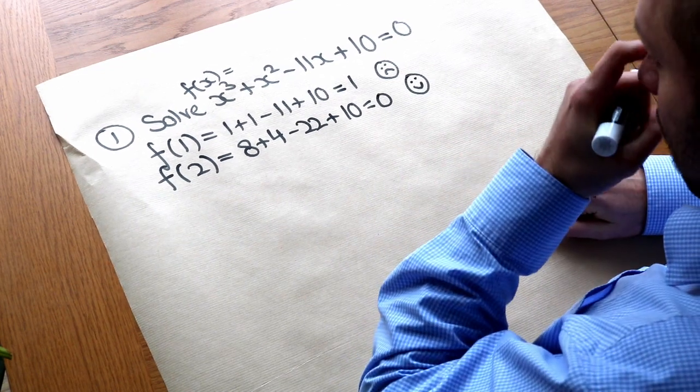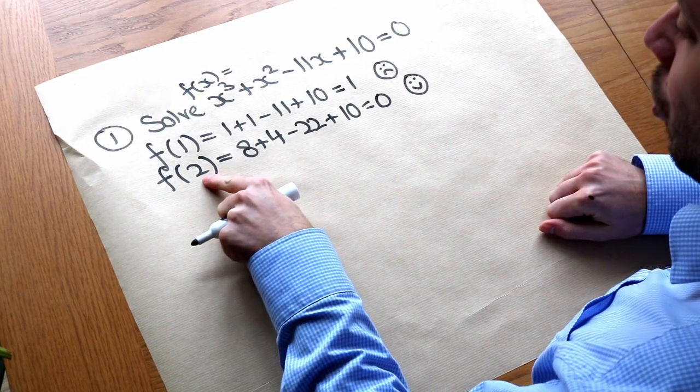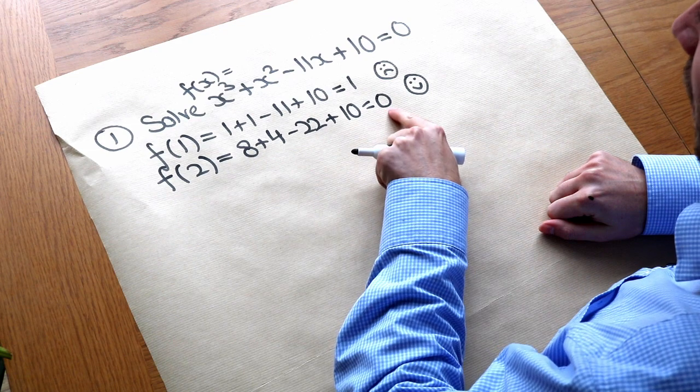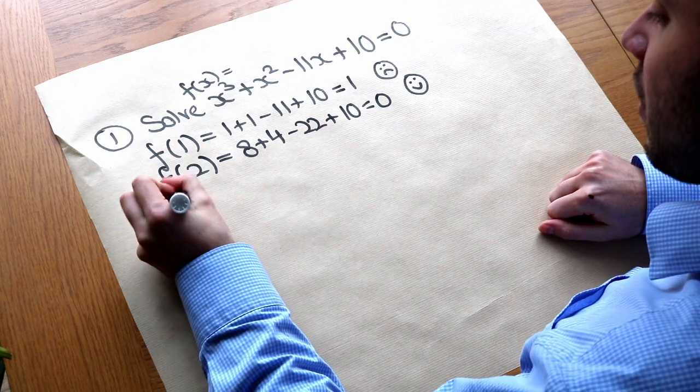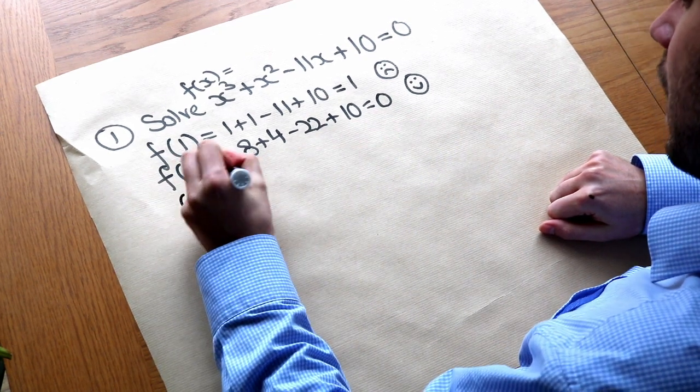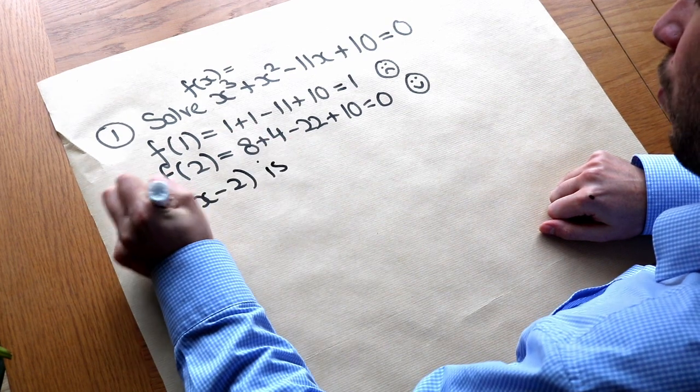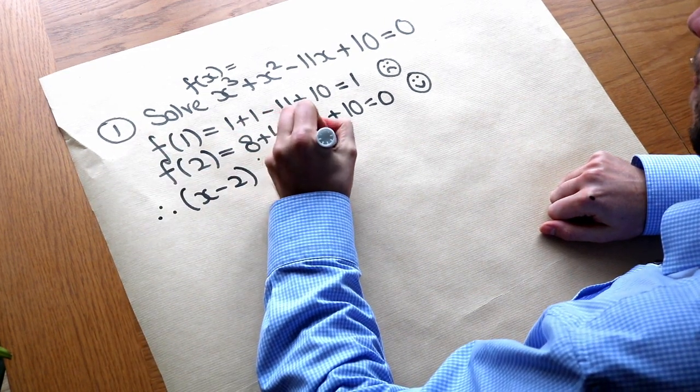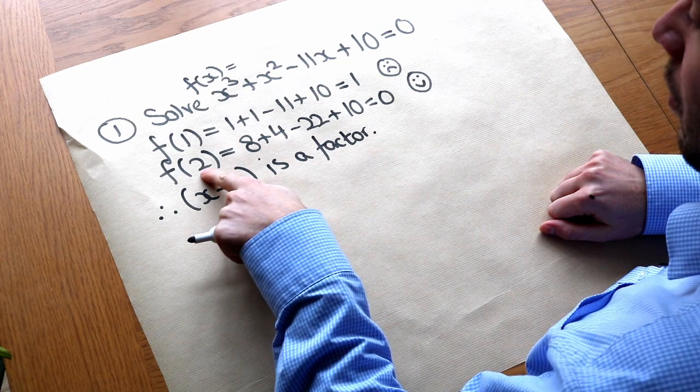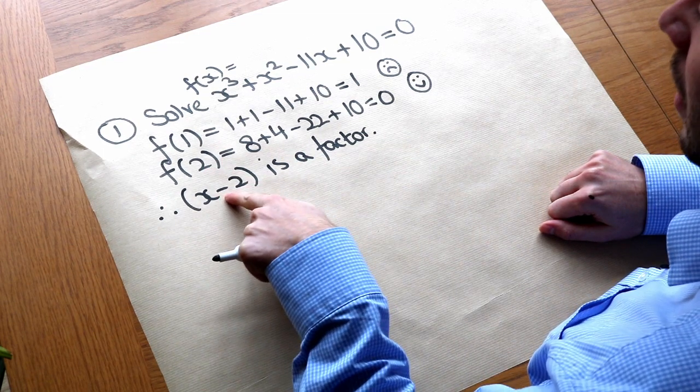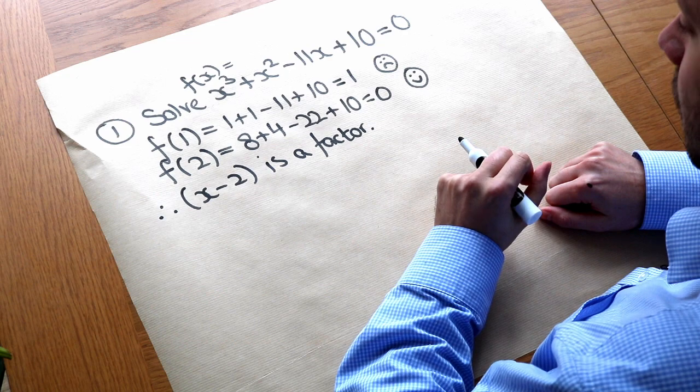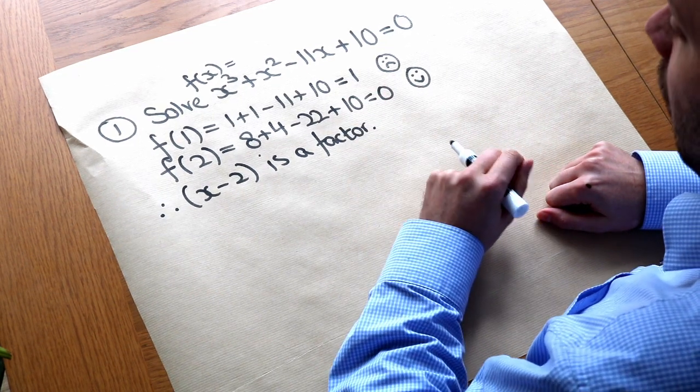And that means if you remember back to the factor theorem that if two works and it gives you zero as the output then x minus two is a factor. Therefore, that's the factor symbol is a factor. Do you remember that we just negate what that number is and shove an x in the front. So it's x minus two and that would be the factor.